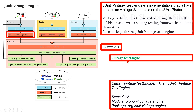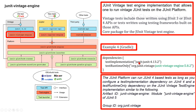As another example, we can consider the VintageTestEngine class — the JUnit Vintage test engine. This is available since version 4.12, and it is in the module org.junit.vintage.engine and in the package org.junit.vintage.engine.